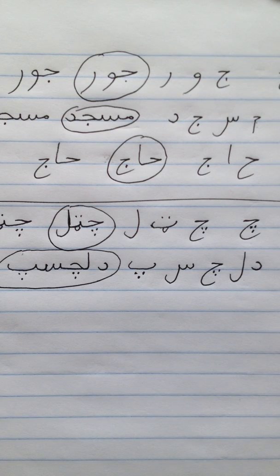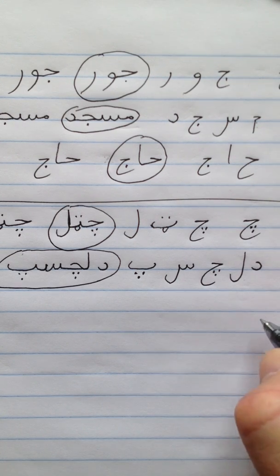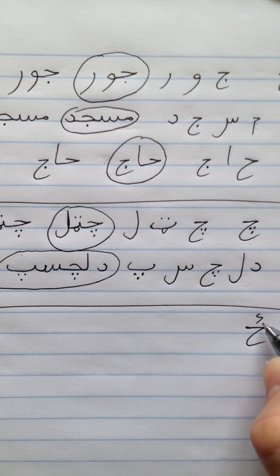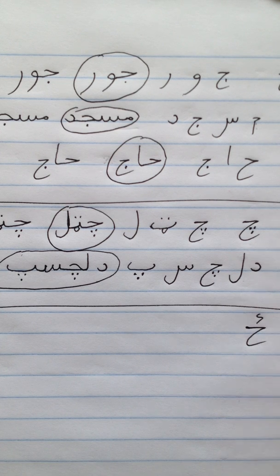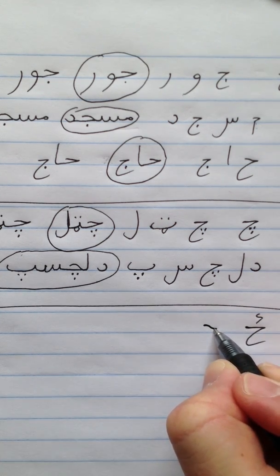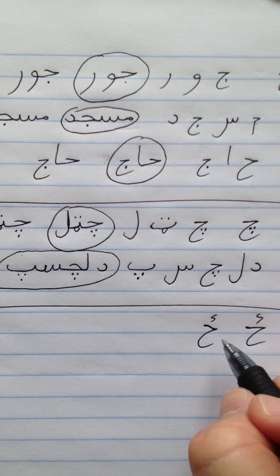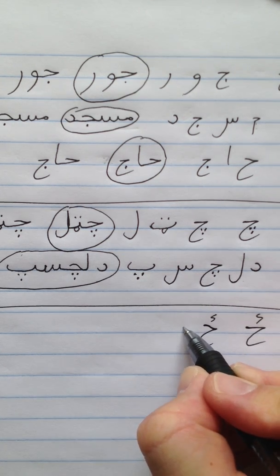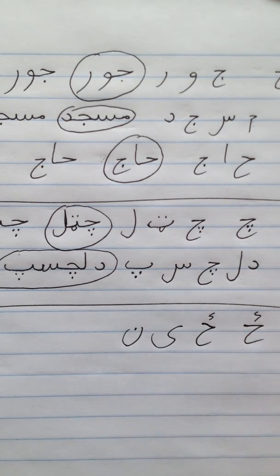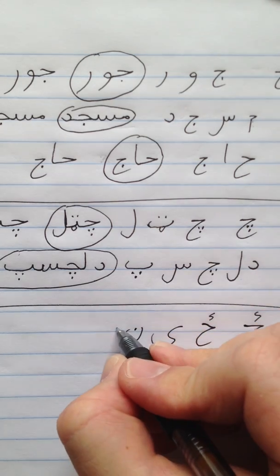Let's do one with the letter ZE. Remember ZE has a backwards Z on top. We'll start with ZE at the beginning of a word. We'll do the word ZENA, which means woman. This has the letters ZE, YA, NUN, YA.